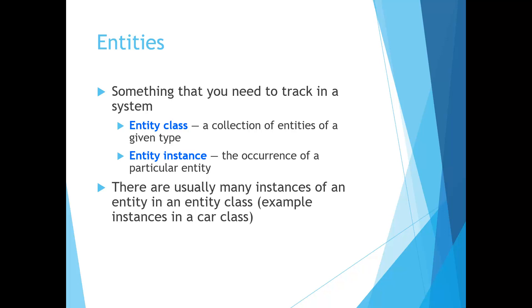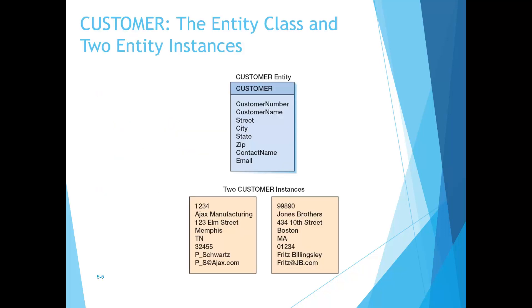There are usually many instances of an entity in an entity class. This figure represents the customer entity with a list of attributes, and you can see below the entity a list of two different instances of a customer. The blue diagram is the graphical representation of the entity itself — the blue rectangle is the entity itself, and those below are instances of this entity.